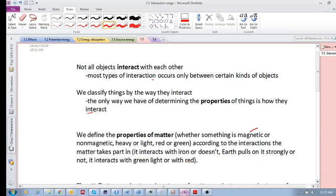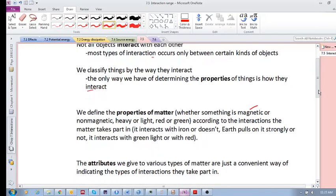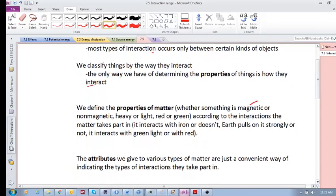We define the properties being of a certain color depending on whether that matter interacts with green light or with red light. So the properties of matter are defined according to how that matter interacts with the things around it. The attributes we give to various types of matter are just a convenient way of indicating the types of interactions they take part in.